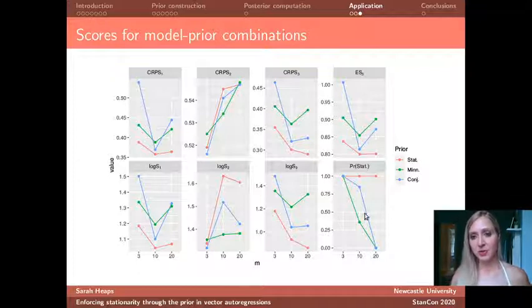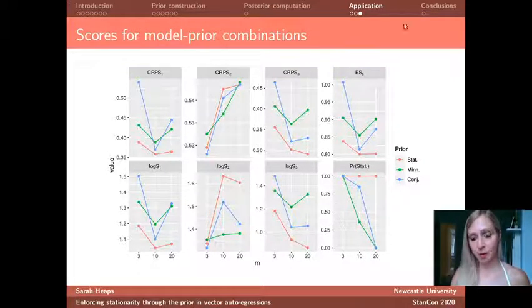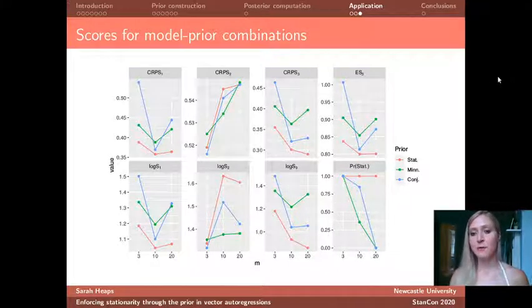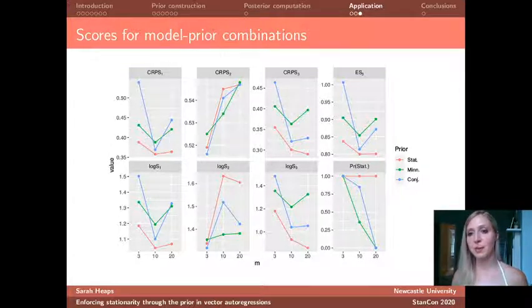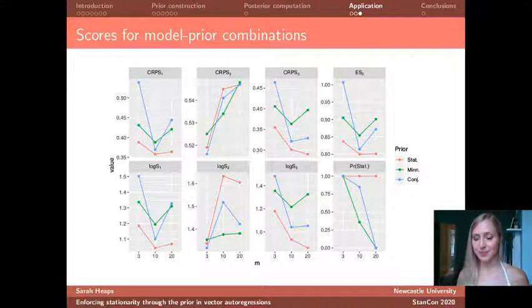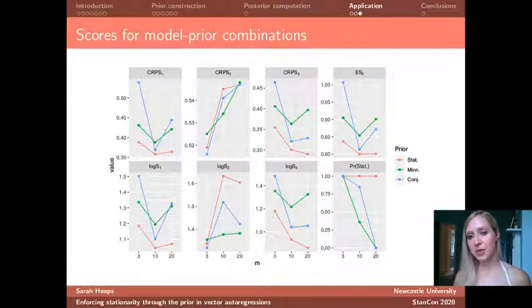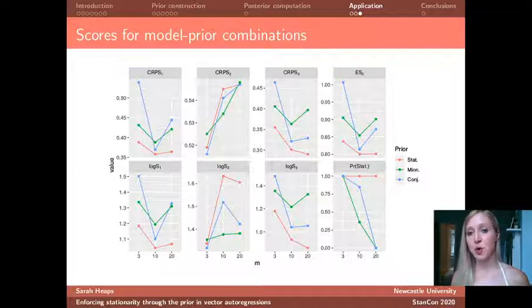So for this talk, I just want you to focus on the two plots on the far right. So in the top row, we have the plot showing the energy score for our model where we fit to three variables, 10 variables, and 20 variables under our three different priors: the stationary prior in pink, the Minnesota prior in green, and the semi-conjugate prior in blue. And the first thing to note is that for all values of m, so for all different numbers of variables, the stationary exchangeable prior lies below the Minnesota and the semi-conjugate priors, indicating better predictive performance. The other really interesting thing to note is that under all three priors, the model which performs best is the one with 10 variables.